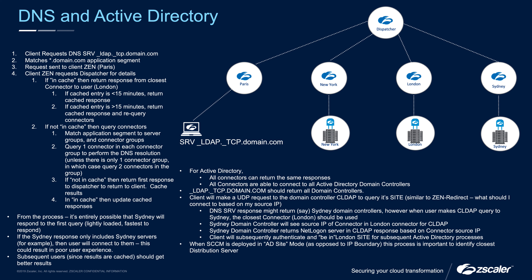If I'm physically on the network and query Active Directory asking which domain controller can authenticate me and provide group policy — because I'm in the New York network — my DNS response will point me at the New York Active Directory server. If I then flew to London, my workstation would initially talk to New York, but the New York domain controller would see my IP is now in London and redirect me to the London domain controller.